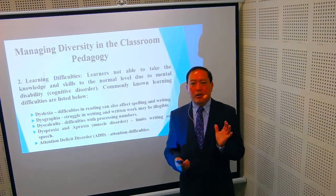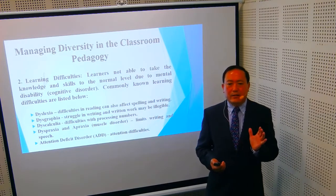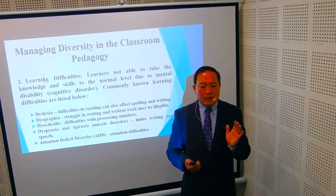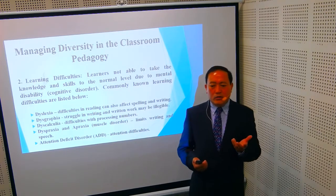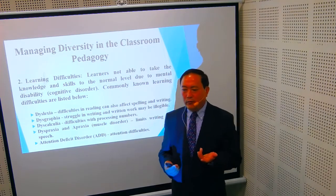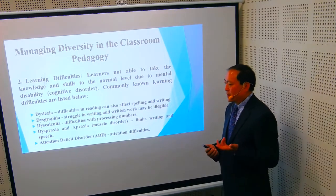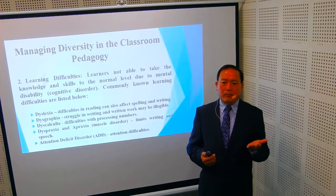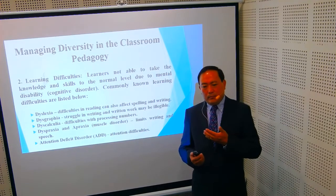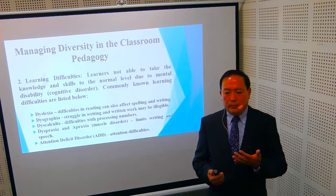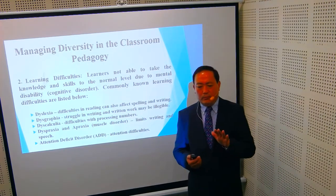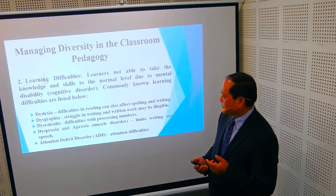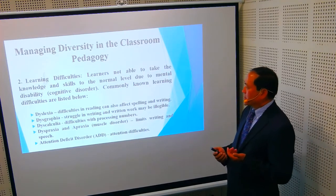Some dyslexia learners are able to read on green paper. Others are able to read and write normally with a yellow color background. You have to identify what kind of dyslexia the learner has. If you provide simple facilities like colored papers or plastic overlays of different colors that they can place on a page or paragraph, they can read. This is one of the easiest ways to manage this diversity in the classroom.